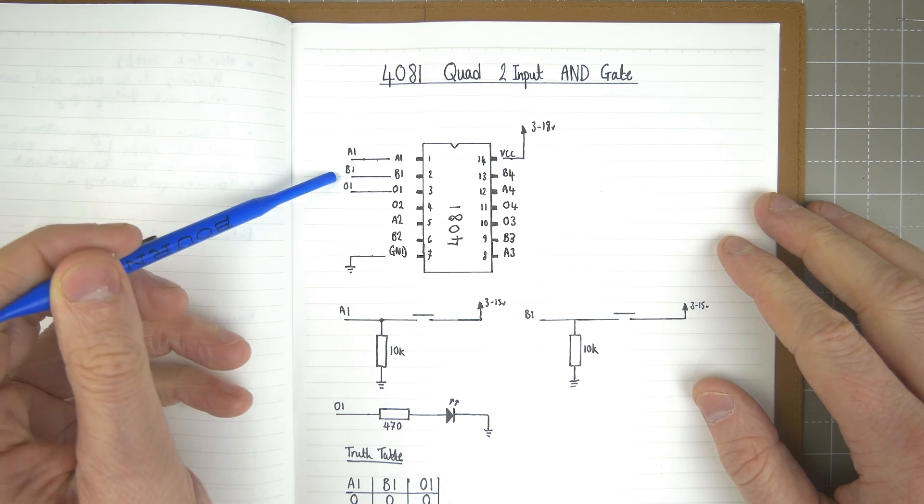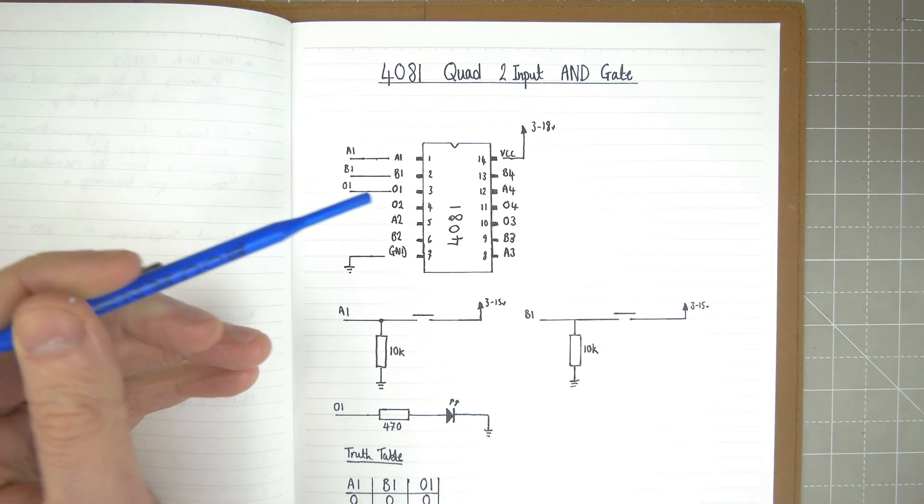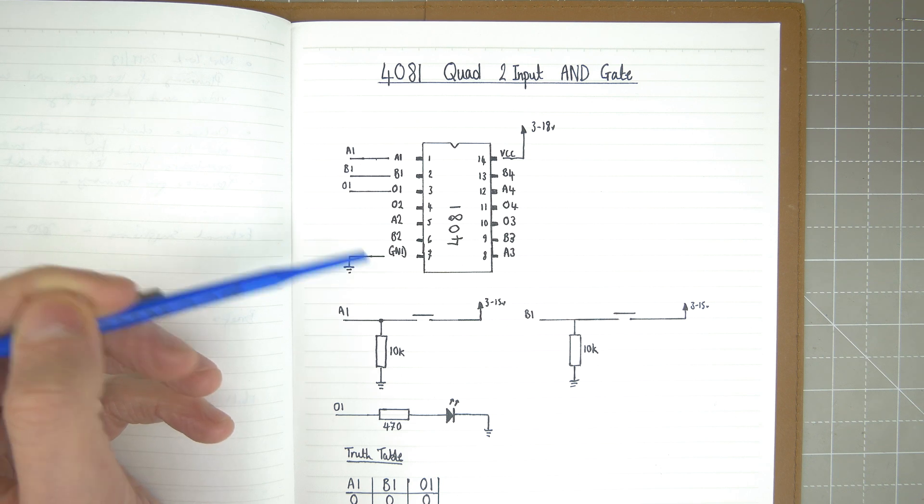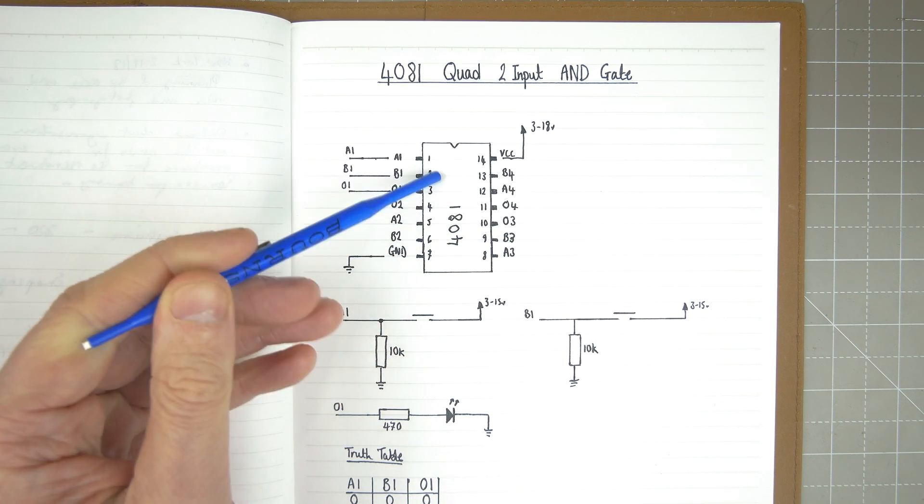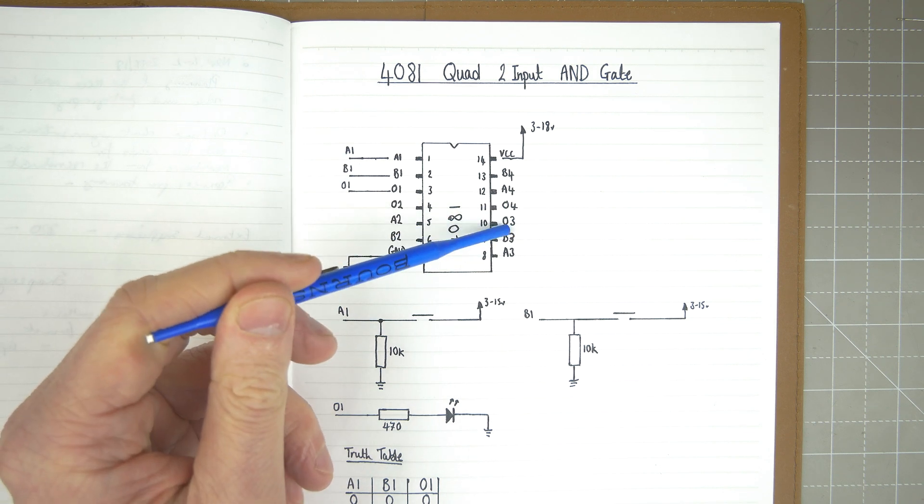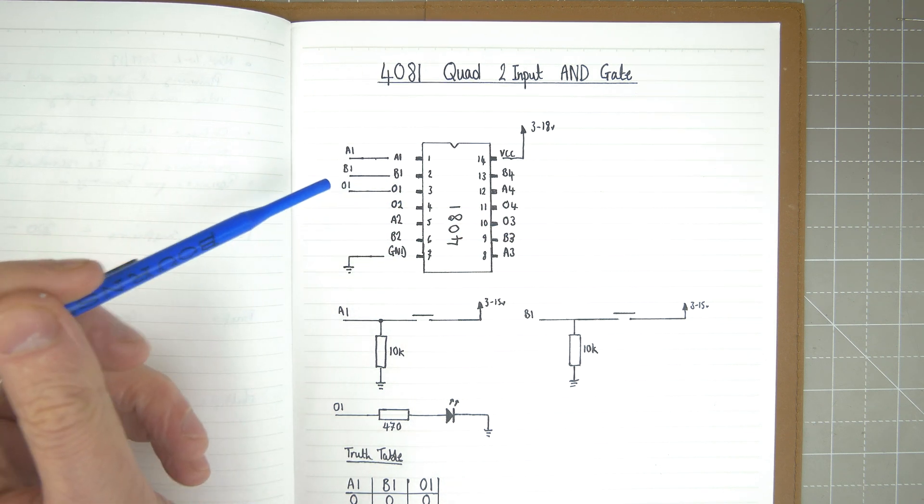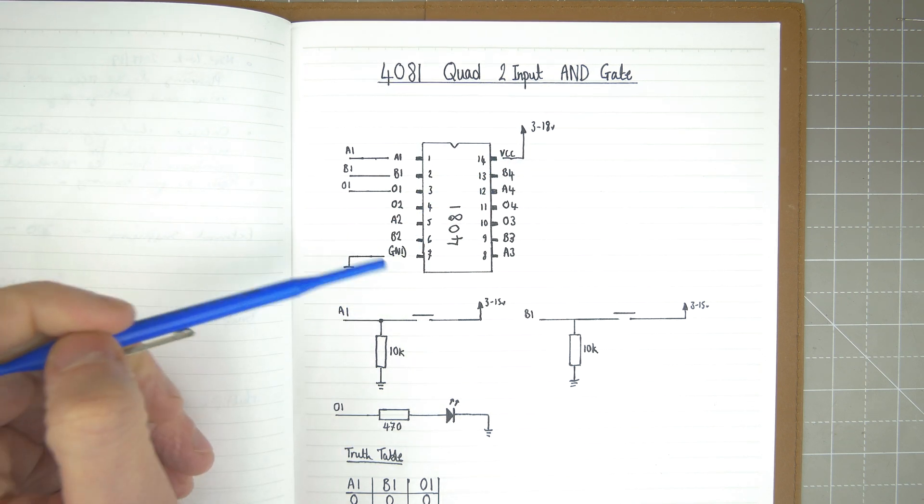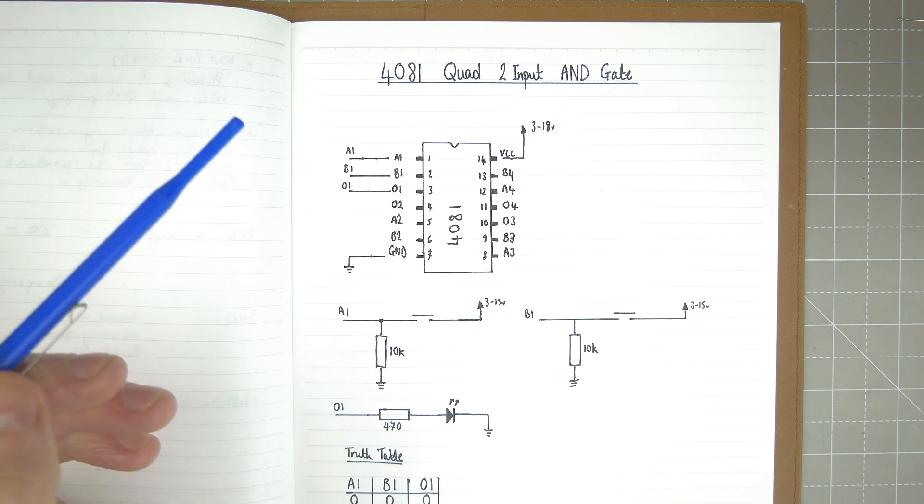You can see we've got input one, input two, but I've labeled them A and B1 because down here you can see A and B2 for the second AND gate, A and B3 for the third, and A and B4 for the fourth. The outputs are on either side right next to each other. Output one is here on pin three, and then we've got pin 14 for VCC and pin 7 for ground.